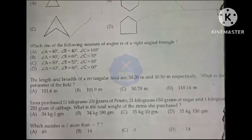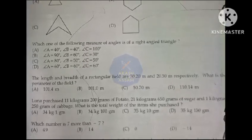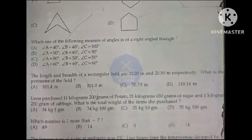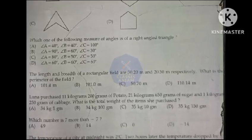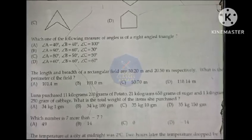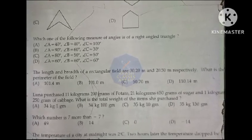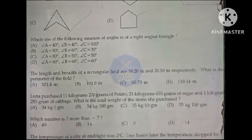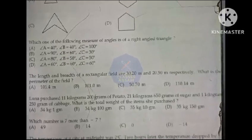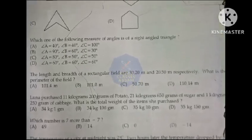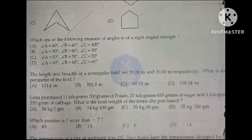What is the perimeter of the field? Option A, 101.4 m. Luna purchased 11 kg 200 g of potato, 21 kg 650 g of sugar and 1 kg 250 g of cabbage. What is the total weight of the items she purchased?